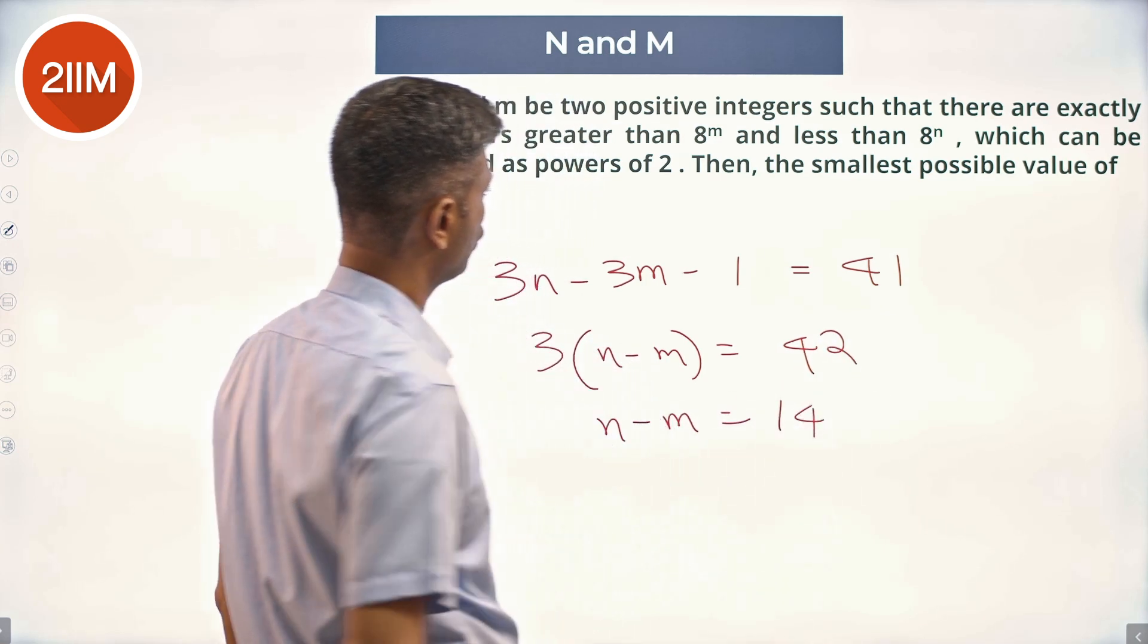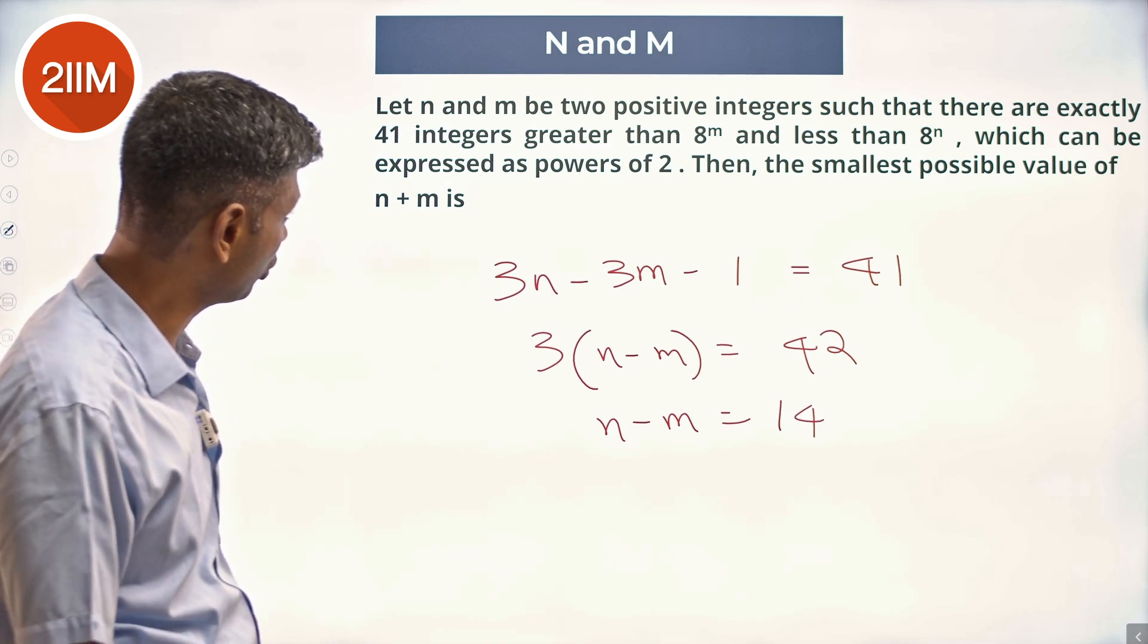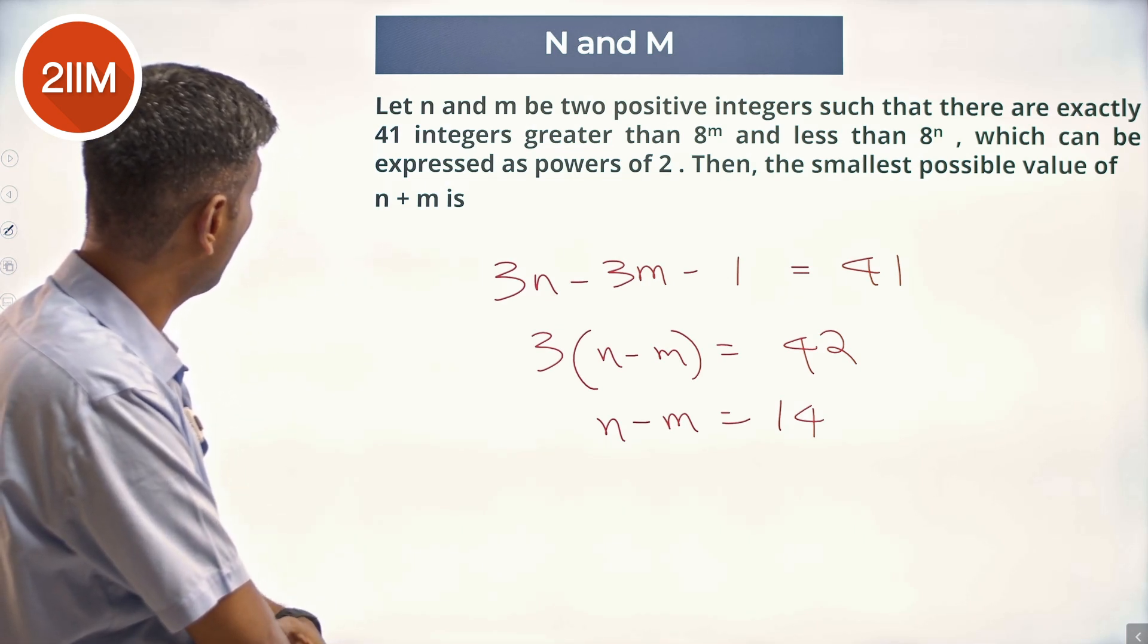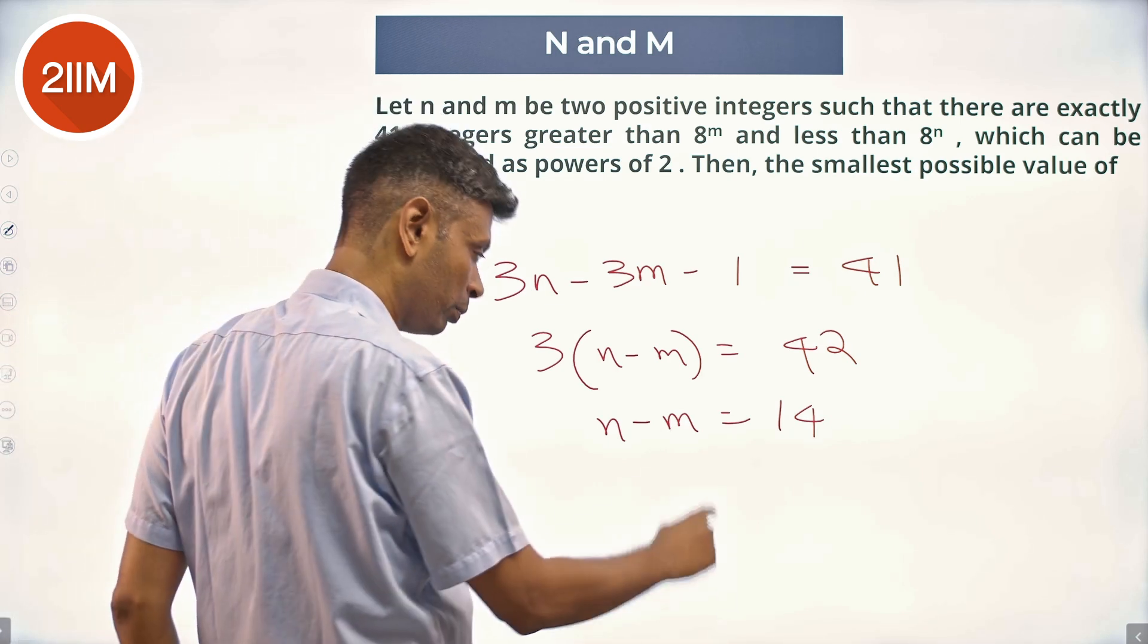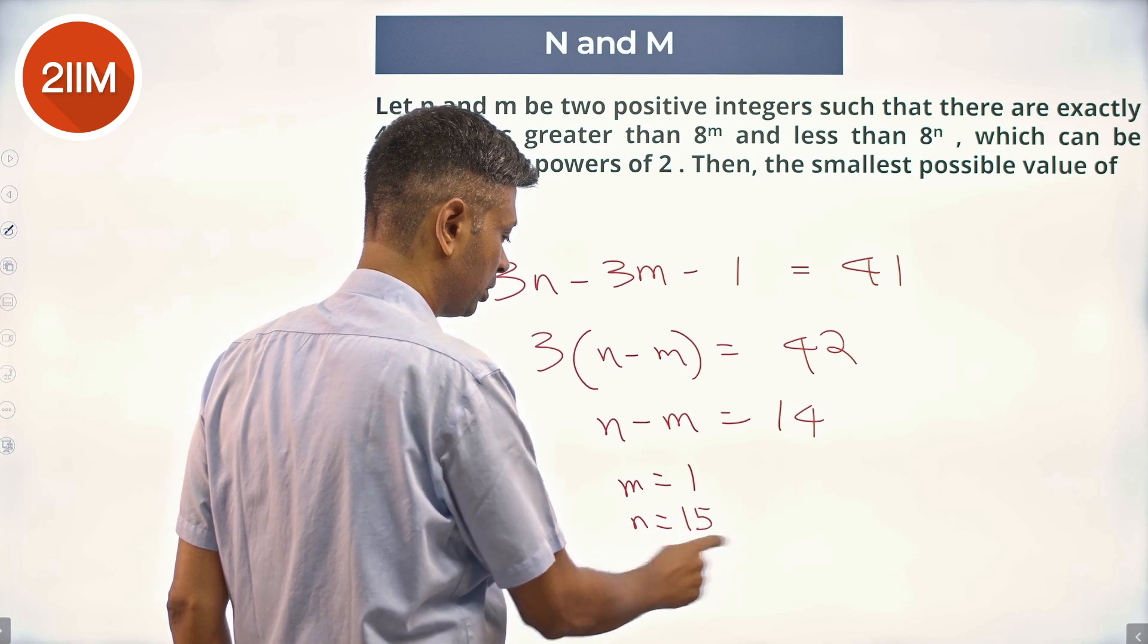What are the smallest values of m plus n? n minus m is 14, all we need is for m and n to be positive integers. So m could be 1, m is 1, in which case n is 15. 1 plus 15 is 16.